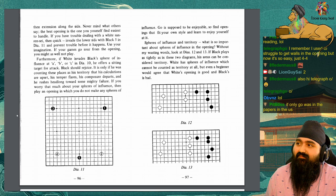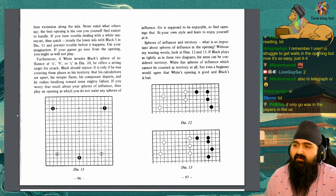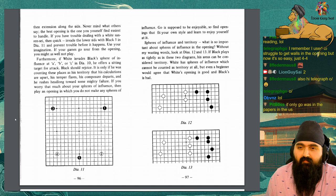Never mind what others say, the best opening is one you yourself find easiest to handle. If you have trouble dealing with a white sanrensei, then quickly invade the lower side with black 5 in diagram 11, and prevent trouble before it happens. Use your imagination! If your games go sour from the opening, you may as well not play.